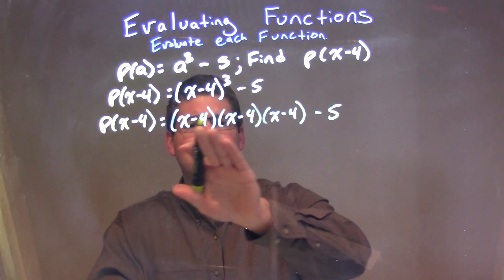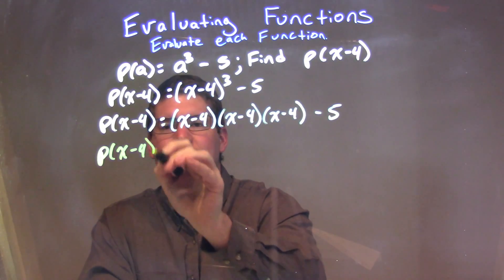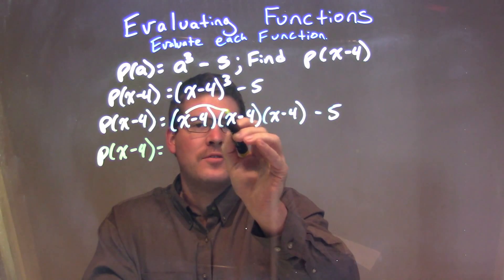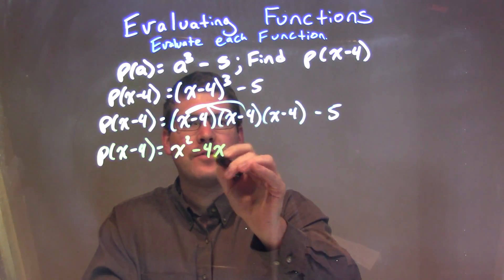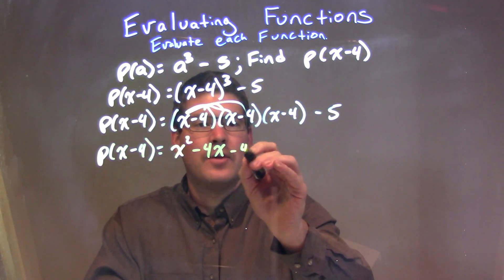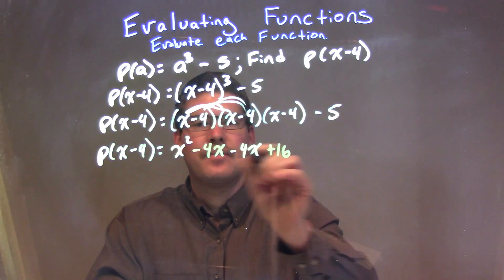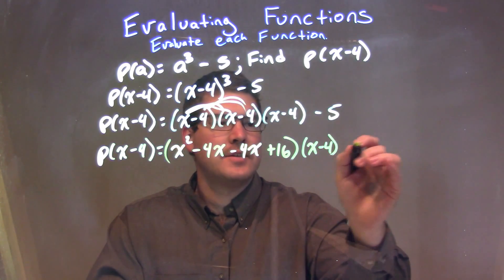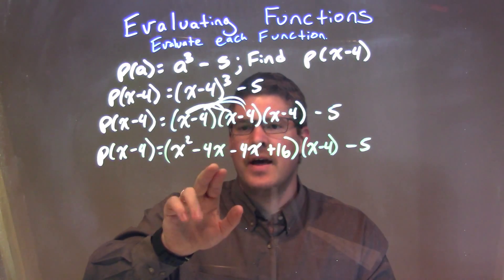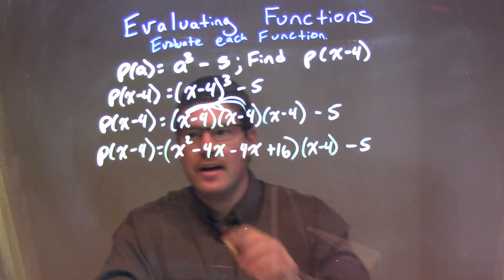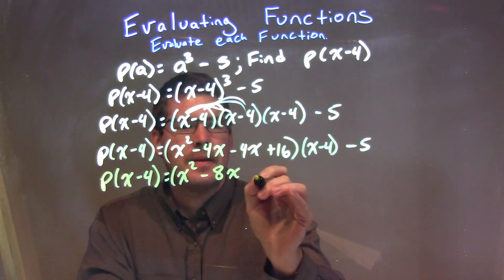Now, what I'm going to do is distribute the first two together — really x minus 4 all squared. Using FOIL: x times x is x squared, x times negative 4 is negative 4x, negative 4 times x is negative 4x as well, and negative 4 times negative 4 is positive 16. That's all going to be multiplied by x minus 4, and then we have minus 5. We can simplify: negative 4x minus 4x is negative 8x. So, we have x squared minus 8x plus 16.